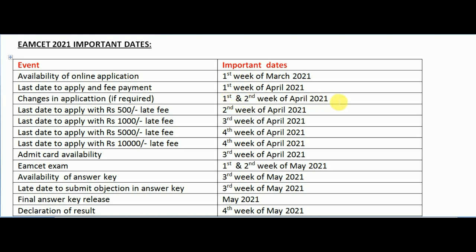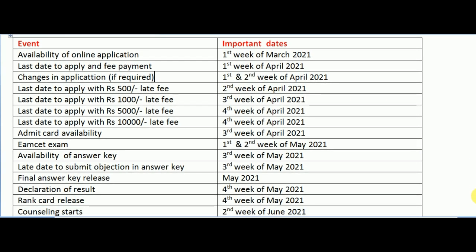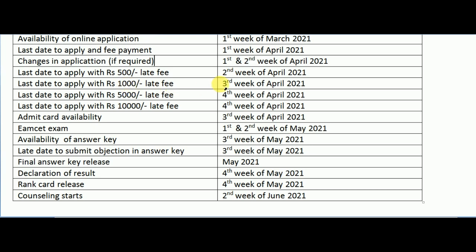Last date to apply for MSET 2021 with a 500 rupee late fee is the second week of April. Last date to apply with a 1,000 rupee late fee is the third week of April. Last date to apply with a 5,000 rupee late fee is the fourth week of April. Last date to apply with a 10,000 rupee late fee is also the fourth week of April.